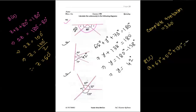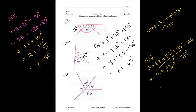Adding the three known values: 67 plus 52 plus 135. First 7 plus 2 is 9, 9 plus 5 is 14, carry the 1. Then 6 plus 5 is 11, plus 1 is 12, carry 1. So the sum is 254 degrees. Therefore a plus 254 degrees equals 360 degrees, and a equals 360 minus 254, which is 106 degrees. That is the final solution of 8c.